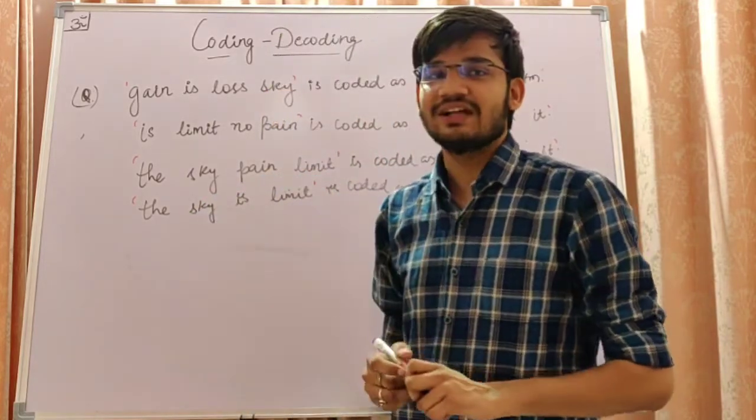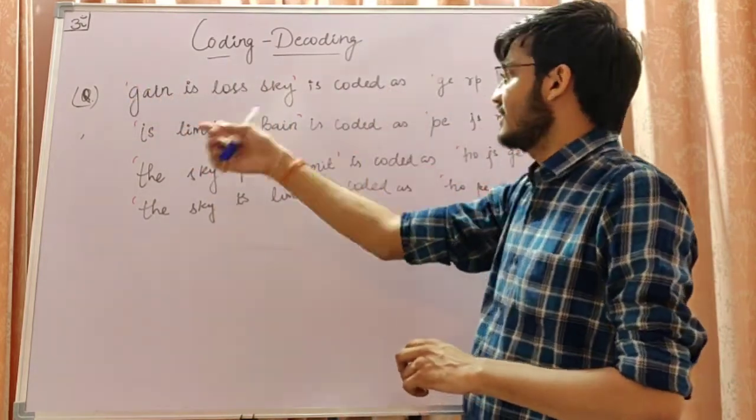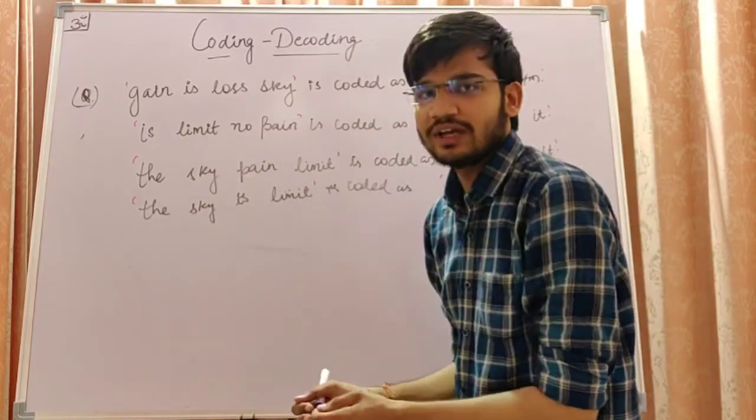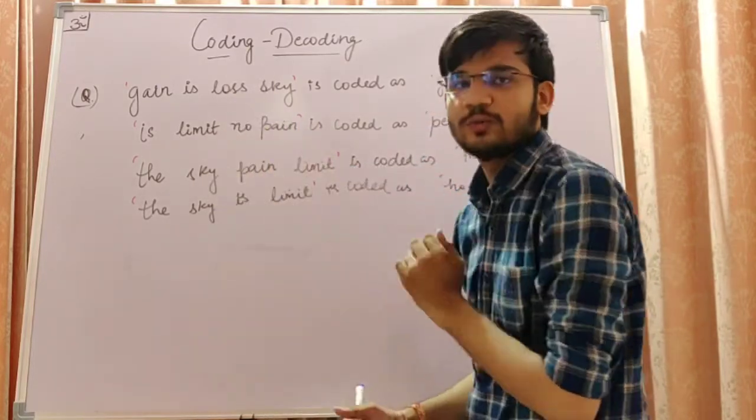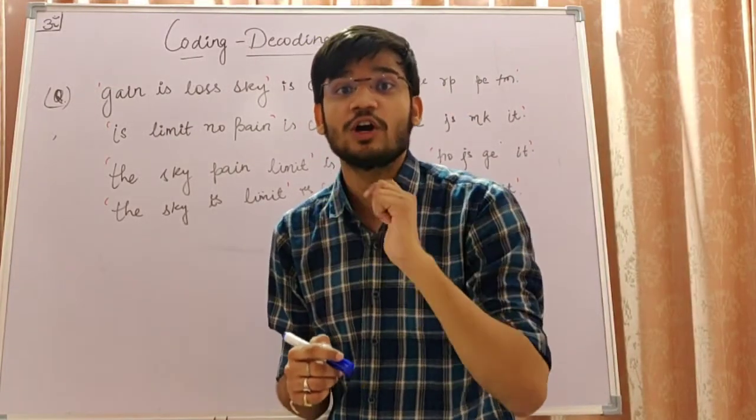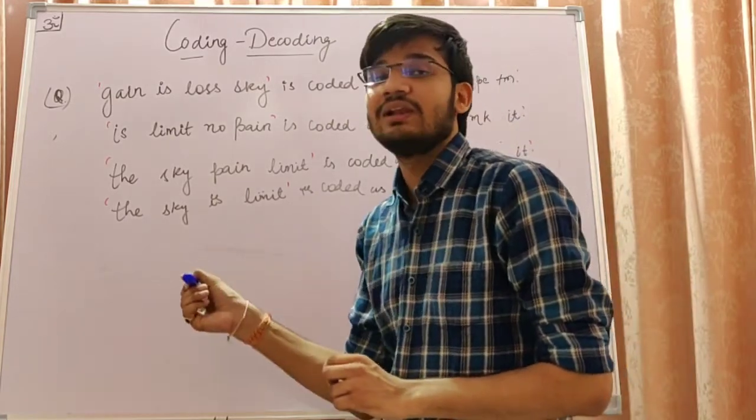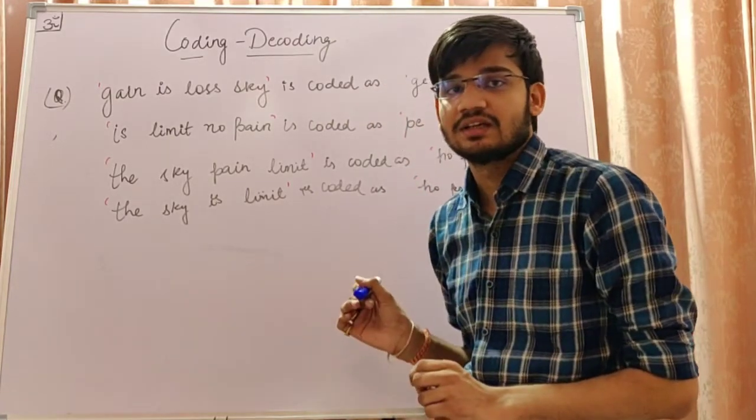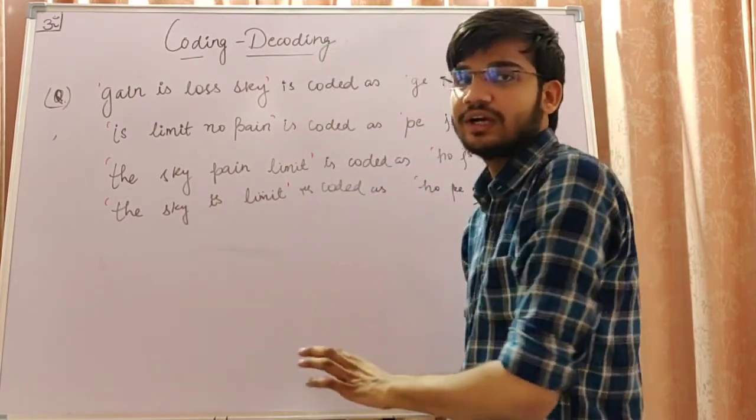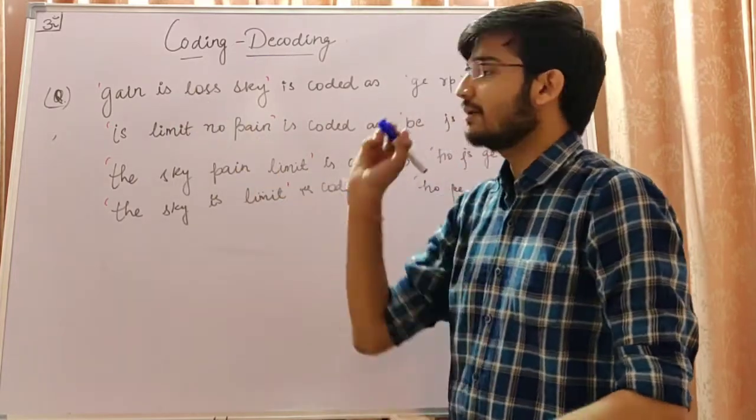Today, we talk about the second question type. If this line is coded as this, they will ask for any line or anything related to the code. We have to focus on how or what. How will this be coded as, or what will be coded as? I will tell you all the questions. Let's start.